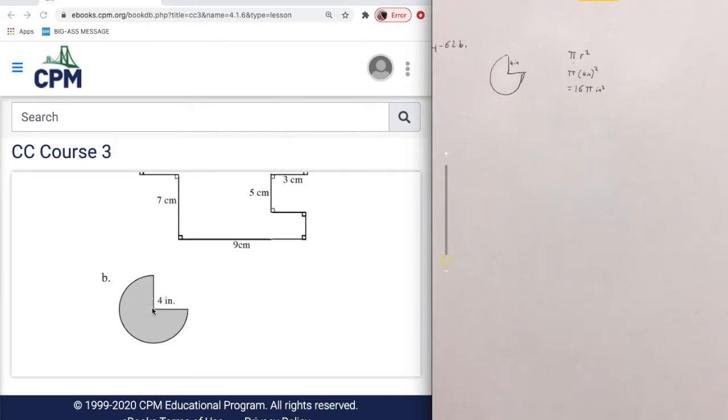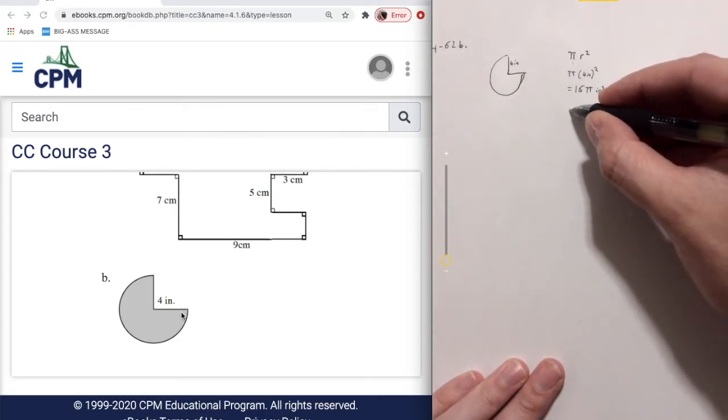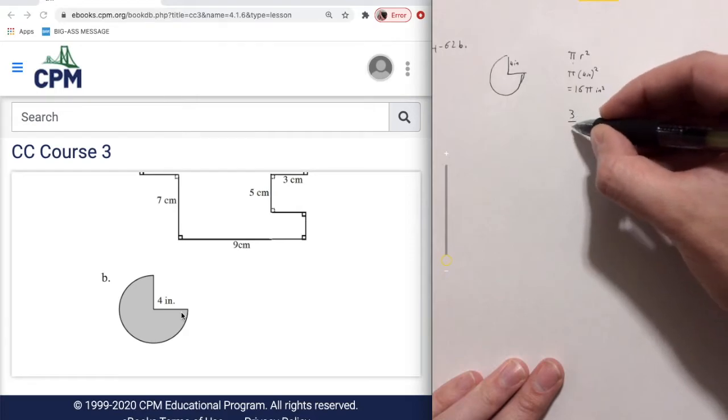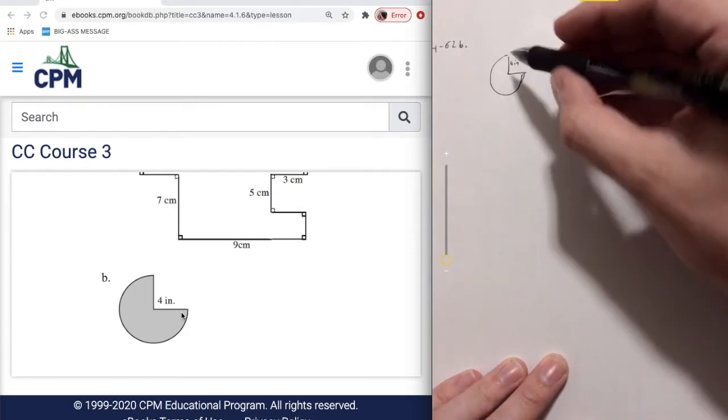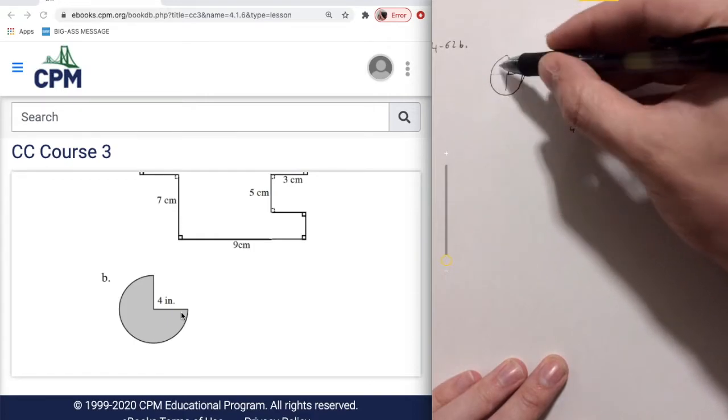But we're missing one quarter of the circle right there. So to find the area of what we have, we can just multiply this by three quarters. Because we're missing one quarter, we know we have three quarters left.